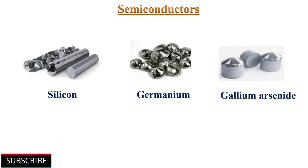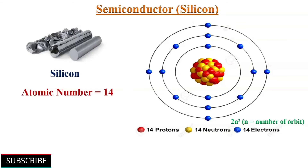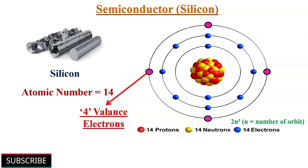Silicon, germanium, and gallium arsenide are some of the most commonly used semiconductors. Let us understand the behavior of a semiconductor by taking the example of silicon. Silicon's atomic number is 14, meaning it has 14 electrons rotating around the nucleus, and its outermost orbit has 4 valence electrons.